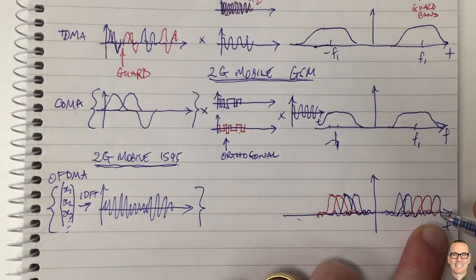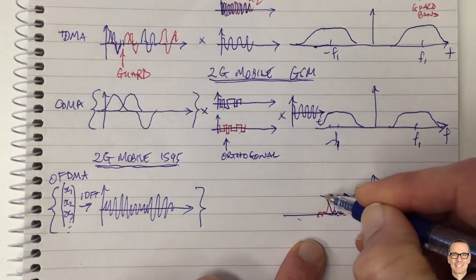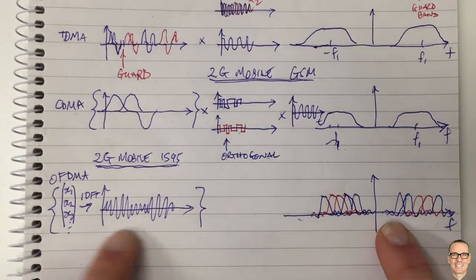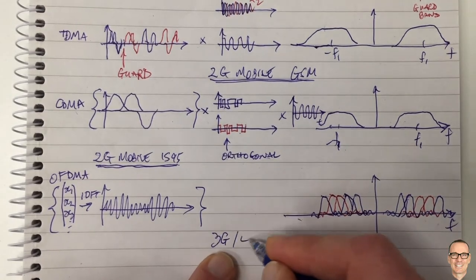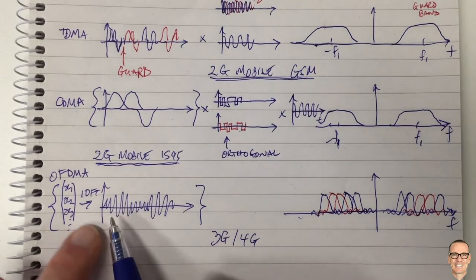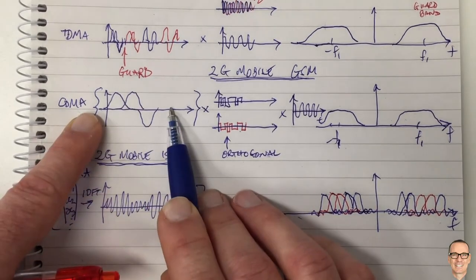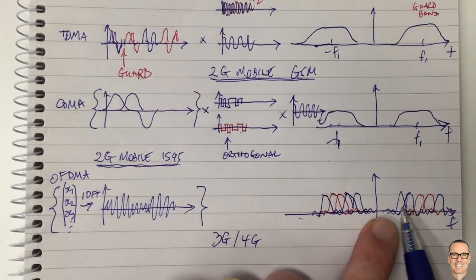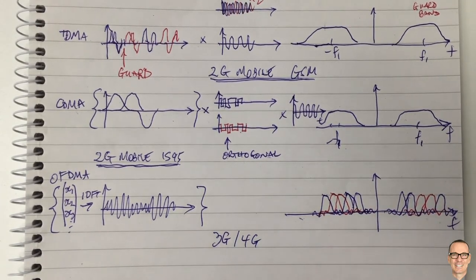One user can use certain sub-channels here and another sub-channel further up, interspersed with sub-channels that other users are using. The benefits of OFDMA — used in 3G and 4G — are that, as with CDMA, everyone sends all of the time. Users don't use all of the frequency all the time, but use different components across the frequency band. You can intersperse and allocate sub-carriers to different users without paying the penalty of a guard band.